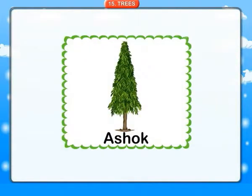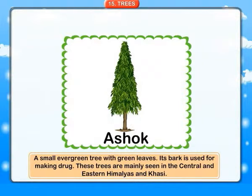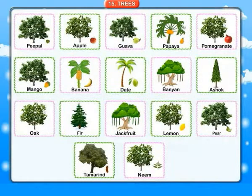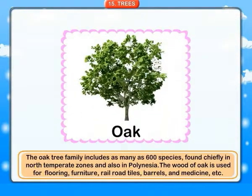Ashok: a small evergreen tree with green leaves. Its bark is used for making drugs. These trees are mainly seen in the central and eastern Himalayas and Kashi. Oak: the oak tree family includes as many as 600 species, found chiefly in north temperate zones and also in Polynesia.